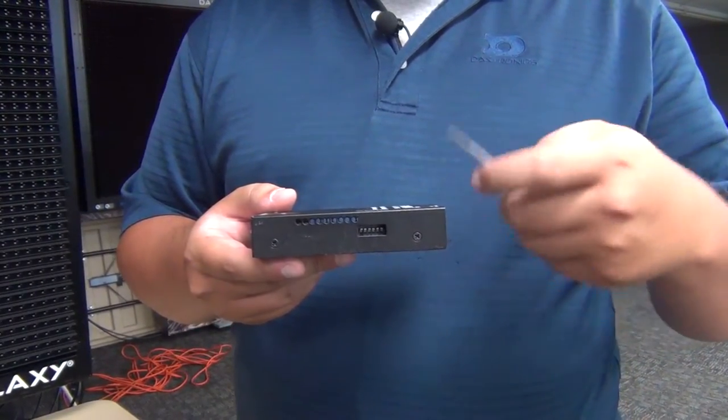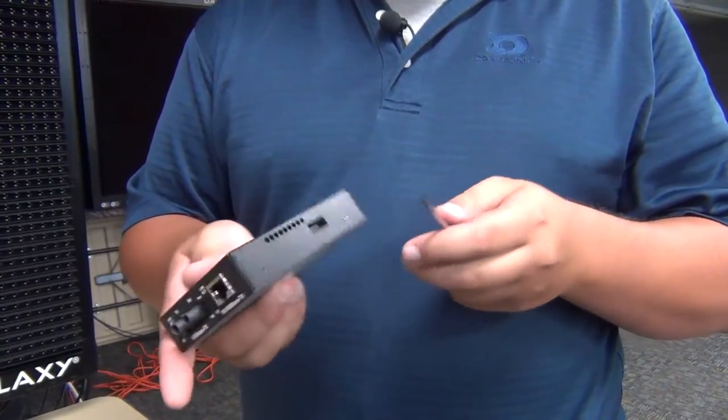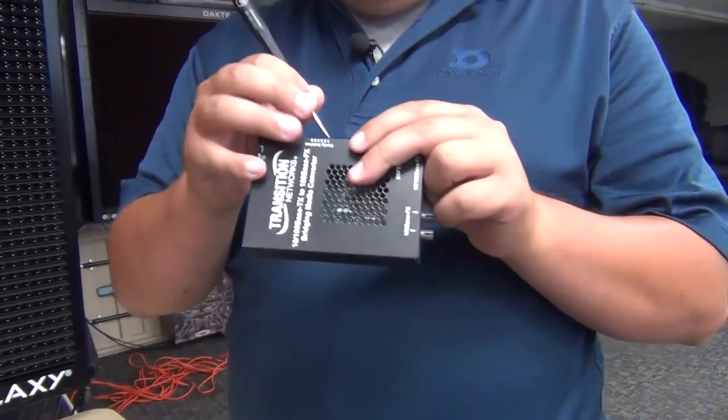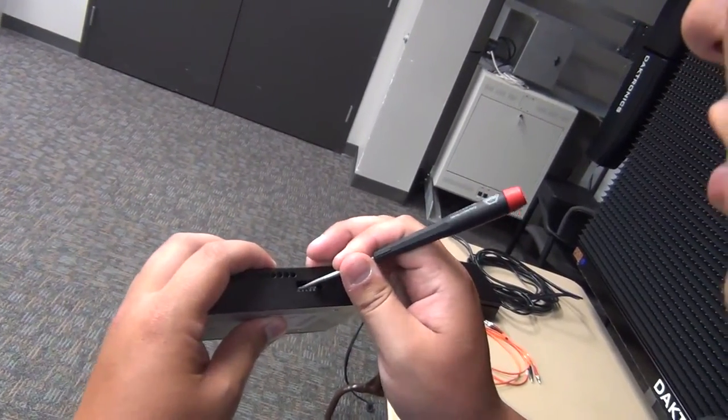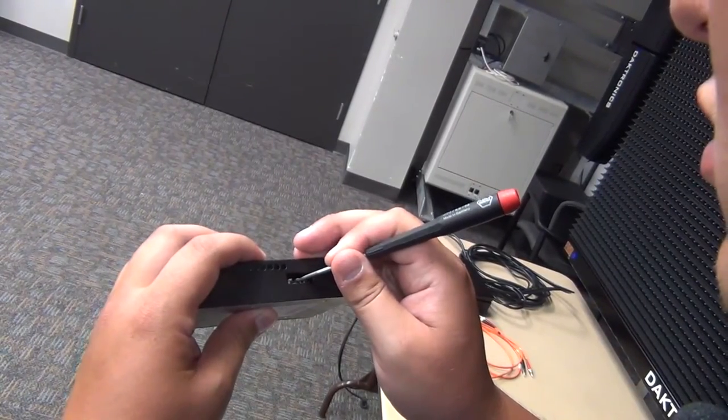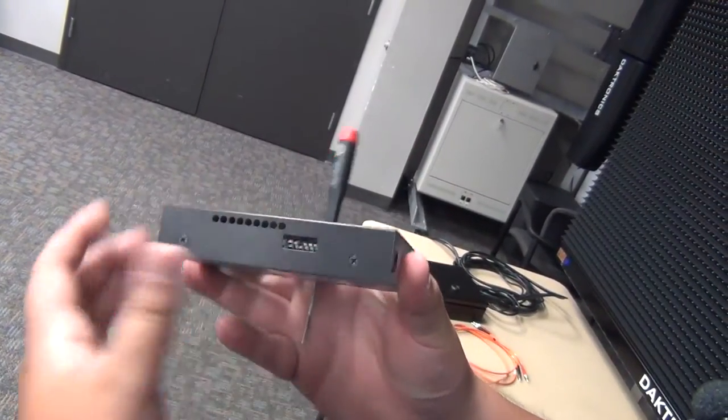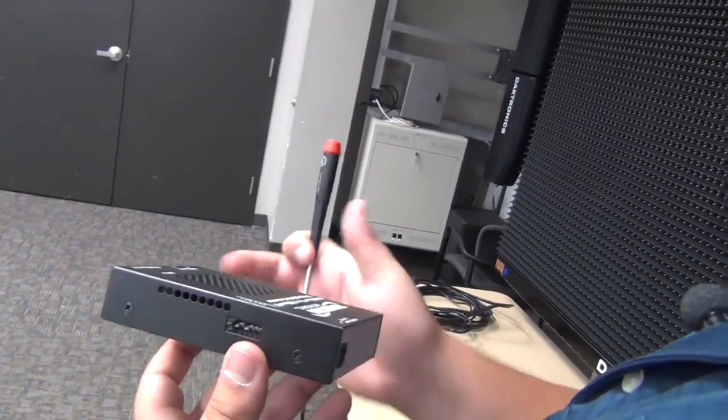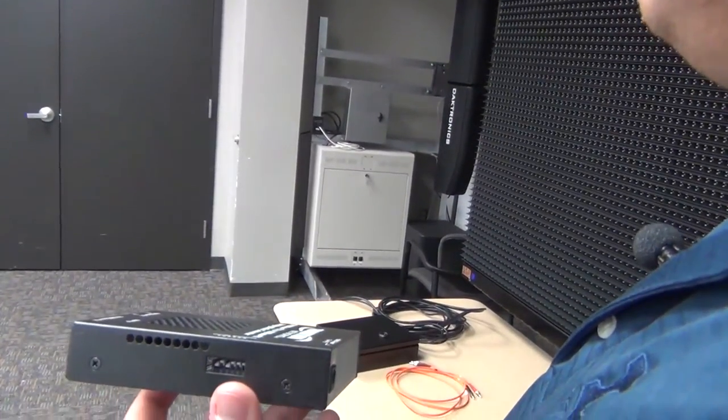So go ahead and use a screwdriver, a little screwdriver to knock those switches down, and I'll do that now. So I'm going to hit one and three, and that's set up for the one inside the building. You'll need to do the same thing for the one at the sign.